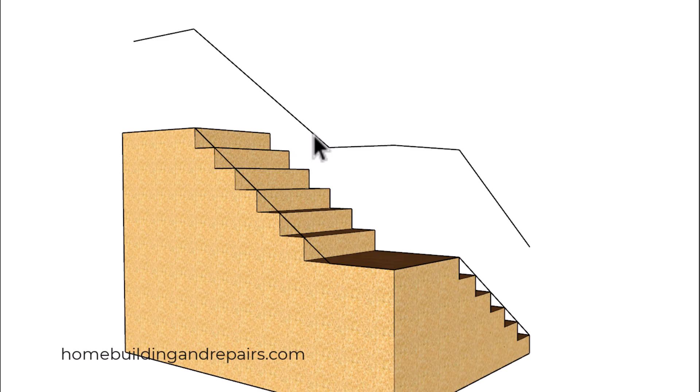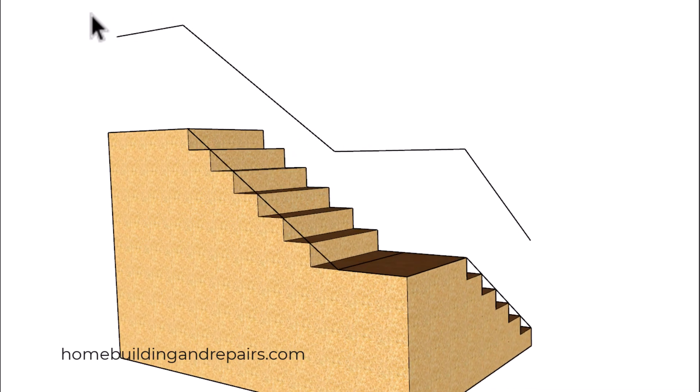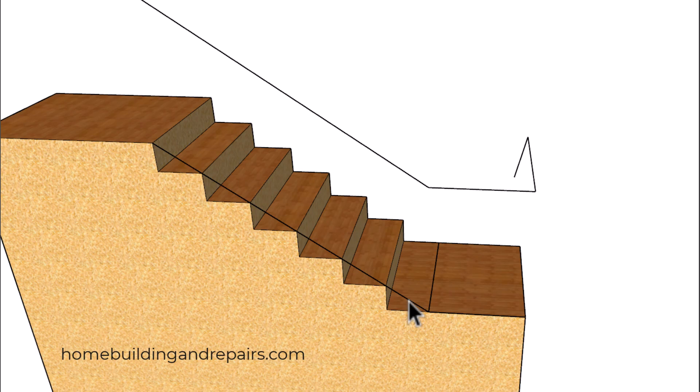Before I get over to the two-step winder, I want to point out something you might not be familiar with when dealing with just a regular landing. That would be the fact that the handrailing can probably work like this.